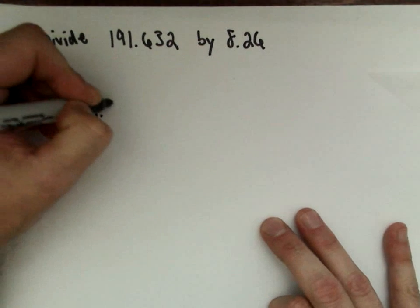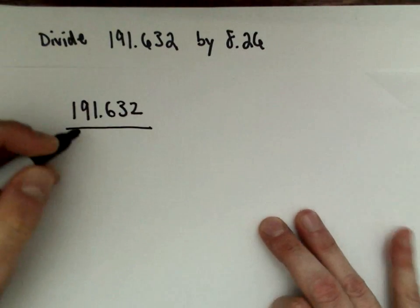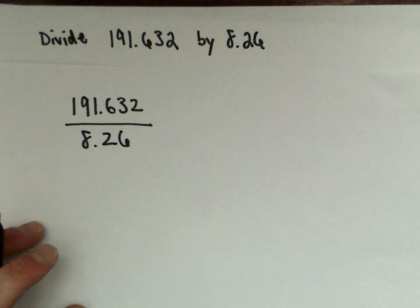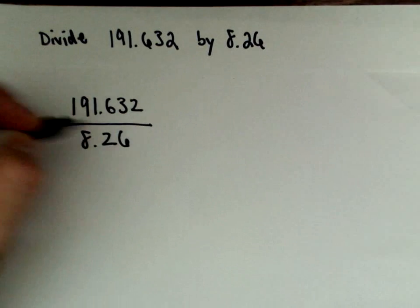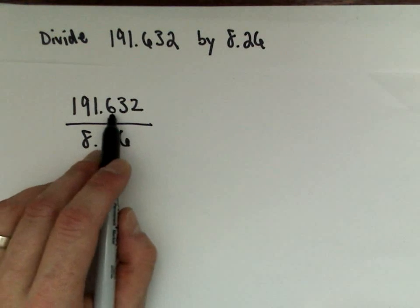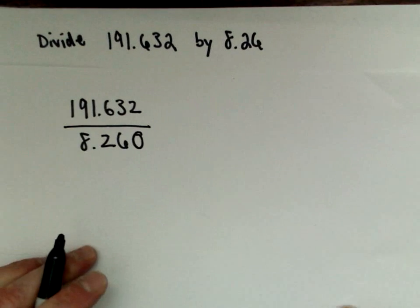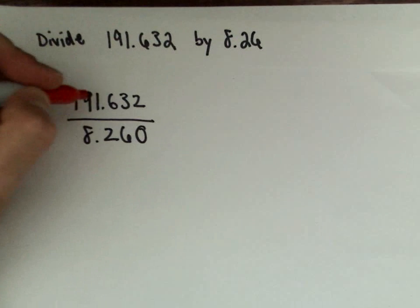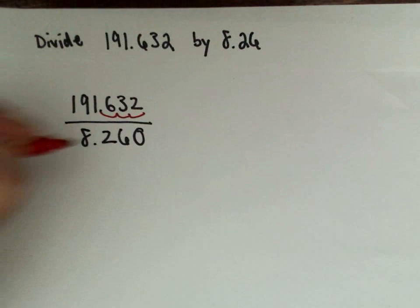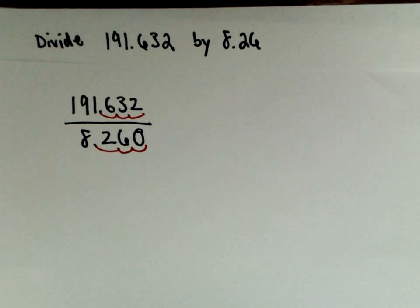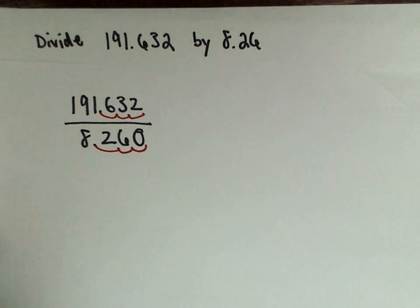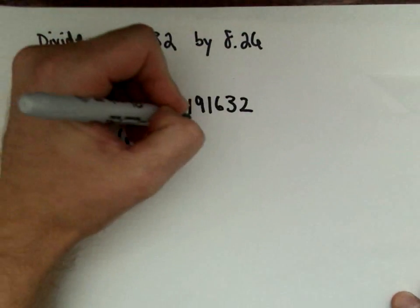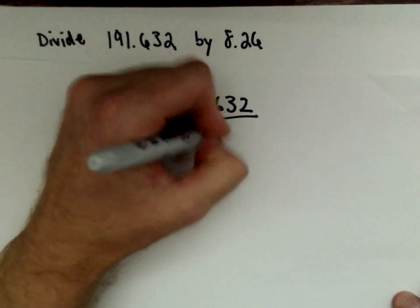So we're doing 191.632 divided by 8.26. Typically the way that we're taught to do this is to get rid of the decimals. Notice in the numerator, after the decimal, there's three numbers. In the denominator, there's only two, but I can always tack a zero on there. What we're really going to do is move the decimal three places in the numerator and three places in the denominator. Technically what you're doing is multiplying the numerator and the denominator by 1,000. So we've got 191,632 over 8,260.